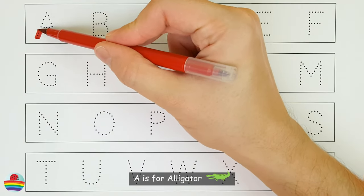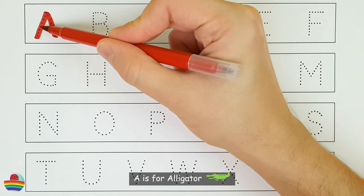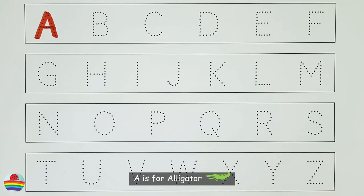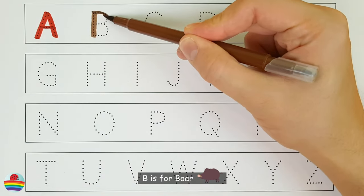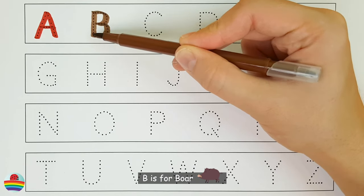A. A is for alligator. A. B. B is for boar. B.